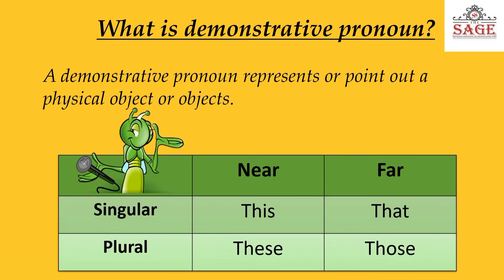Let's begin our presentation with the question: what is demonstrative pronoun? A demonstrative pronoun represents or points out a physical object or objects — physical object means the object which we can see or touch. Or, demonstrative pronouns are pronouns that point to a specific object. They take the place of a noun, noun phrase, activity or situation. They always consist of this, these, that and those, as you can see in the table. This and that refer to singular nouns, and these and those identify plural nouns. The singular this and the plural these refer to a person or thing near the speaker, and the singular that and plural those refer to the person or thing which is far from the speaker in reference to time and distance.